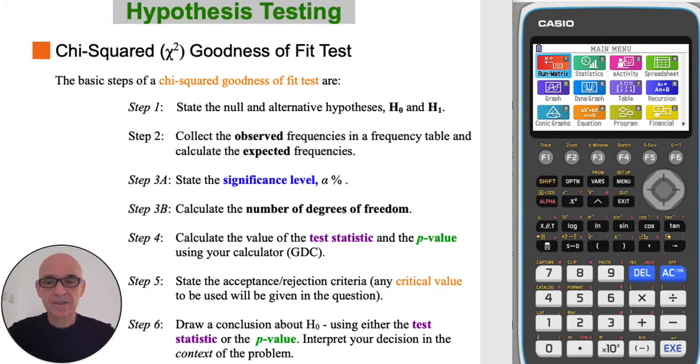The basic steps of a chi-squared goodness-of-fit test are: step 1 to state the null and alternative hypotheses, step 2 to calculate the expected frequencies, step 3 to state the significance level and to calculate the number of degrees of freedom.